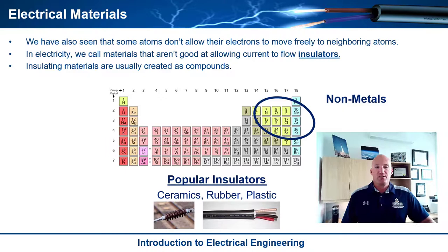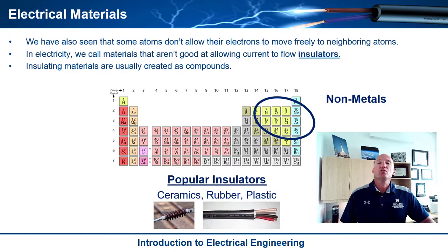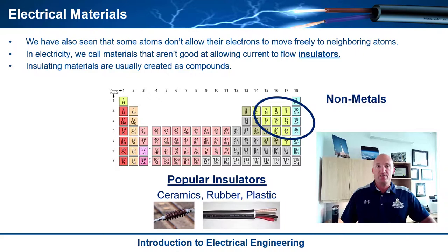Some of the popular insulators are ceramics, also rubber, and plastic. If you think about power lines — when you drive down the road you'll see these conductors hanging off of poles — take a look at what they're hanging from. Those little things that they're hanging from, the hook, those are ceramics. We need a way to grab onto the conductor transmitting a lot of current without conducting into the pole. So ceramics are used to build insulators that can hold on to the wire but won't conduct electricity.